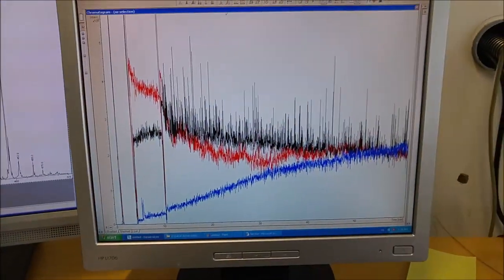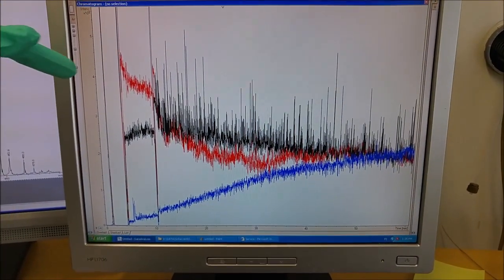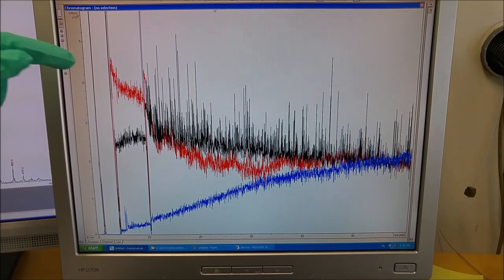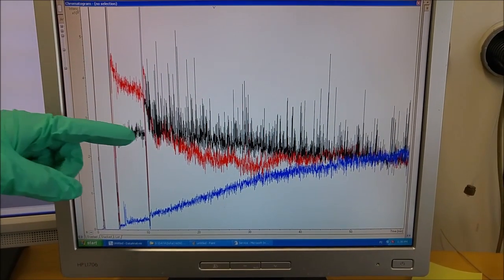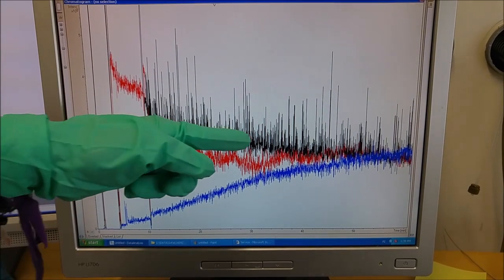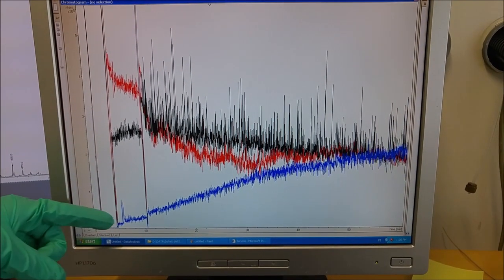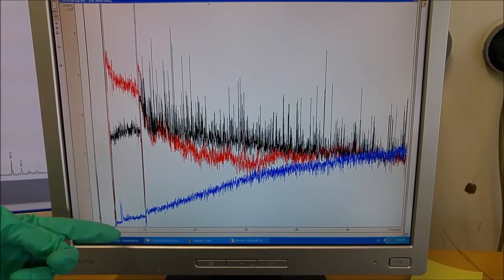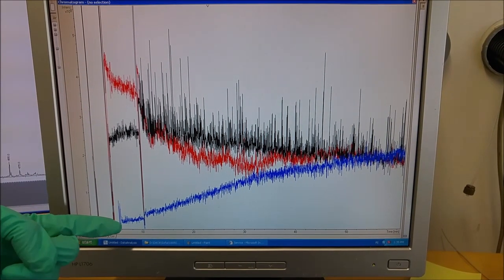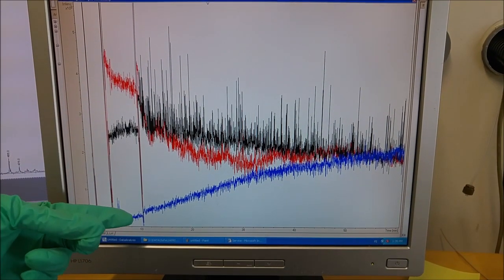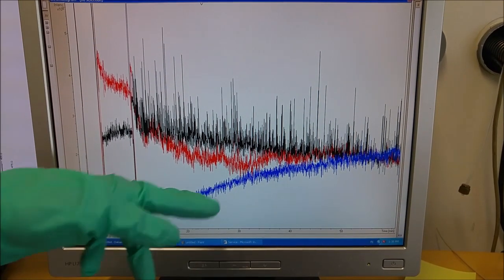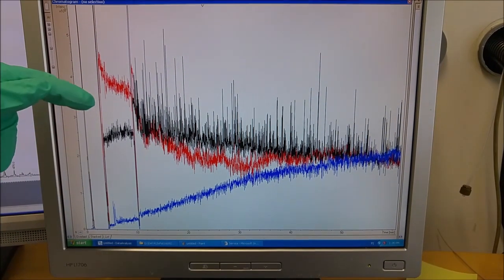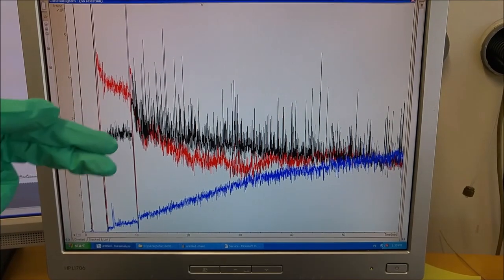And then we obtain an extracted ion profile of the two starting materials. Here the tetrazine shown in red and the trans-cyclooctene shown in black. And over time we can see an increase of the extracted ion profile of the Diels-Alder cycloadduct product, which is shown here in blue. So we can see that that one increases over time while the starting materials decrease over time.